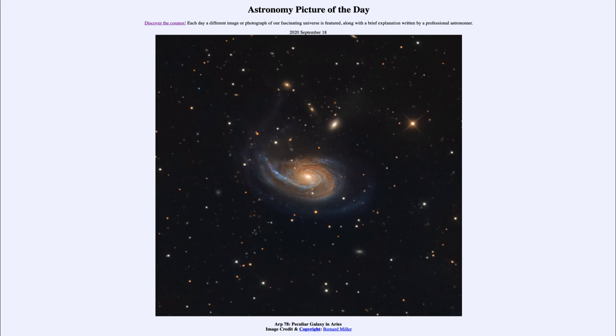So that was our picture of the day for September 18th, 2020. It was titled ARP 78, Peculiar Galaxy in Aries. We'll be back again tomorrow for the next picture, previewed to be 3D Orion. We'll see what that is about tomorrow. Until then, have a great day everyone, and I will see you in class.